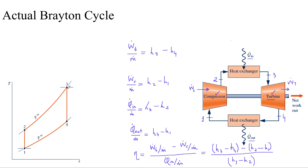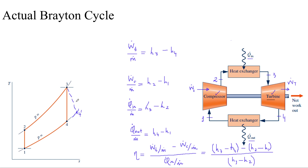For process 3 to 4 across the turbine, for irreversibilities to be included in the analysis, point 4 is going to move outwards because the entropy has to increase. Right now this is an isentropic process, and when there are irreversibilities taking place, this process is going to come down to a point we call 4-dash, so this is our actual process 3 to 4-dash. Across the compressor, instead of a vertical line 1 to 2, the line is going to move inwards to a point we call 2-dash, giving us process 1 to 2-dash.